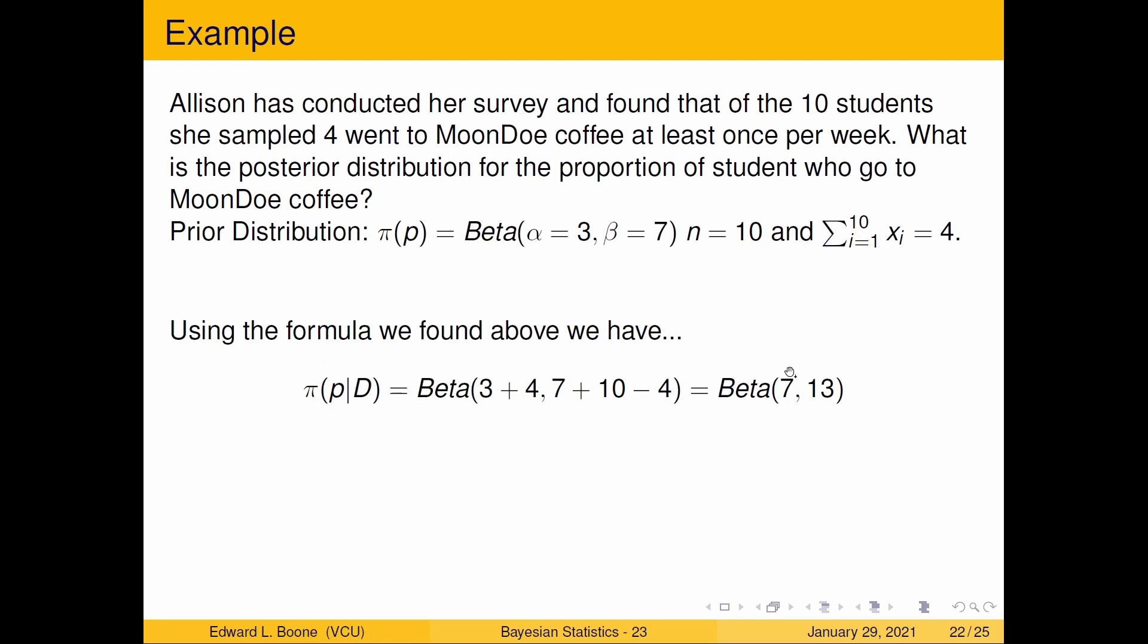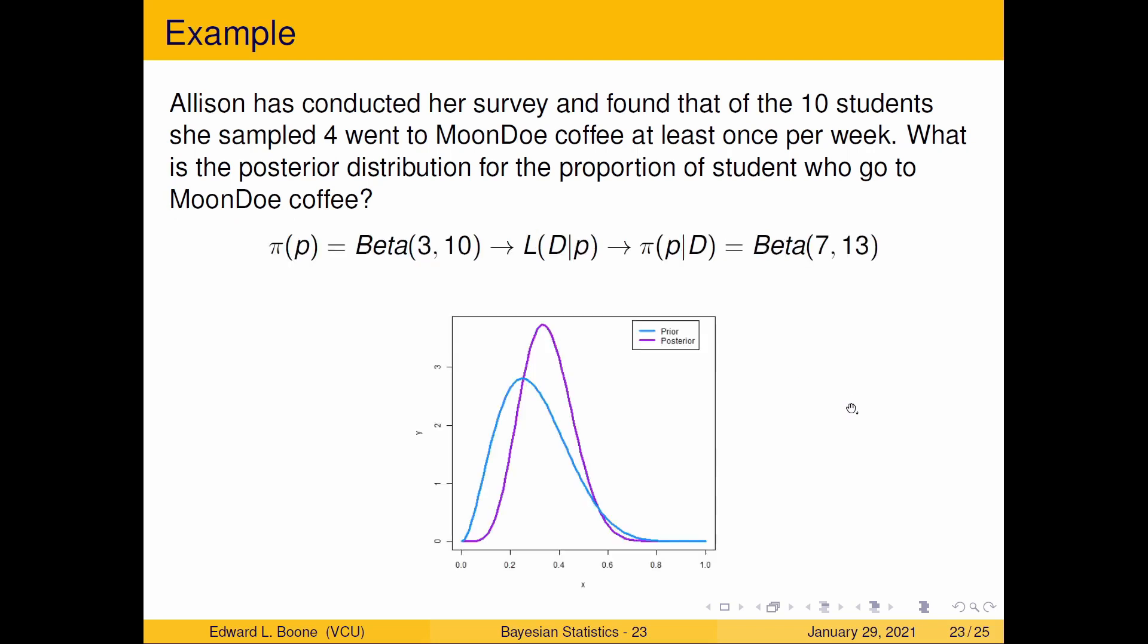If we put this together, we're going to end up with a beta(7,13), and we saw this last time, but now we can actually look at the pictures and see what happens. Notice that you start with the prior distribution, which is a beta(3,10)—the likelihood in the data pushes our posterior to be a beta(7,13).